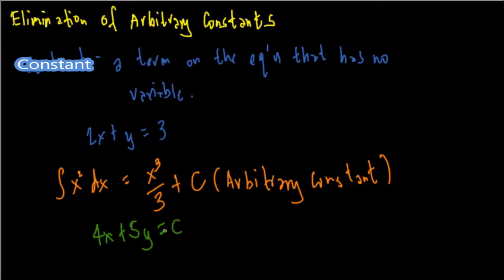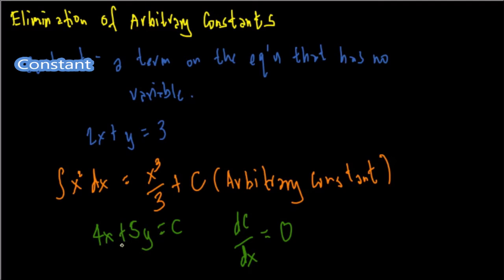To eliminate C and obtain the differential equation, we go back to calculus: the derivative of a constant with respect to any variable is equal to 0. So we need to find the derivative of each term of the equation. Since we have two variables x and y, we will use implicit differentiation.